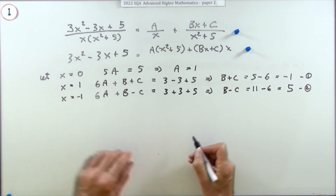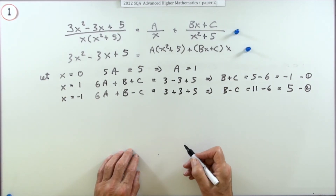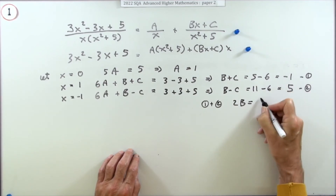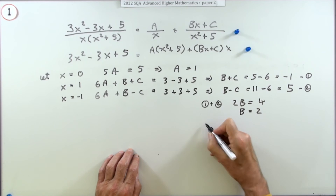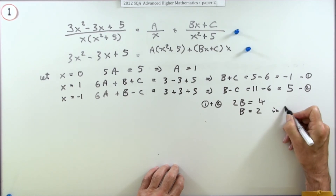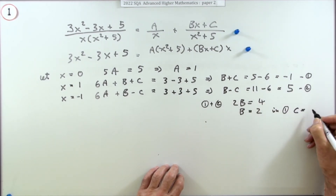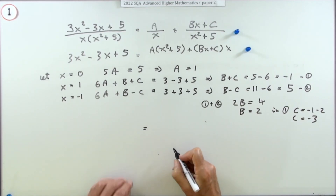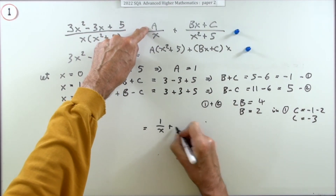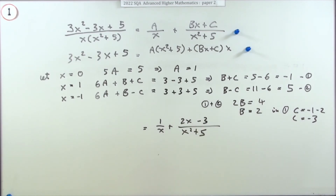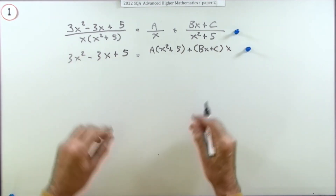That's a little longer than comparing corresponding coefficients. Adding the two simultaneous equations eliminates C: 2B equals 4, so B equals 2. Substituting back gives C equals negative 1 minus 2, so C equals negative 3 as before. Then write down the result: 1 over x plus 2x minus 3 over x squared plus 5. Only then, after all that arithmetic, do you get the mark.